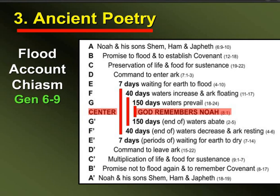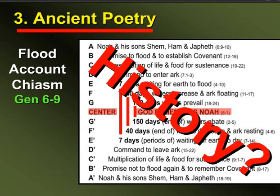In the light of this amazing structure, we can ask a pretty challenging question: is this historical? Does history unfold in chiastic structures? For example, does the history of our nation unfold in such a fashion? I think we all know the answer.